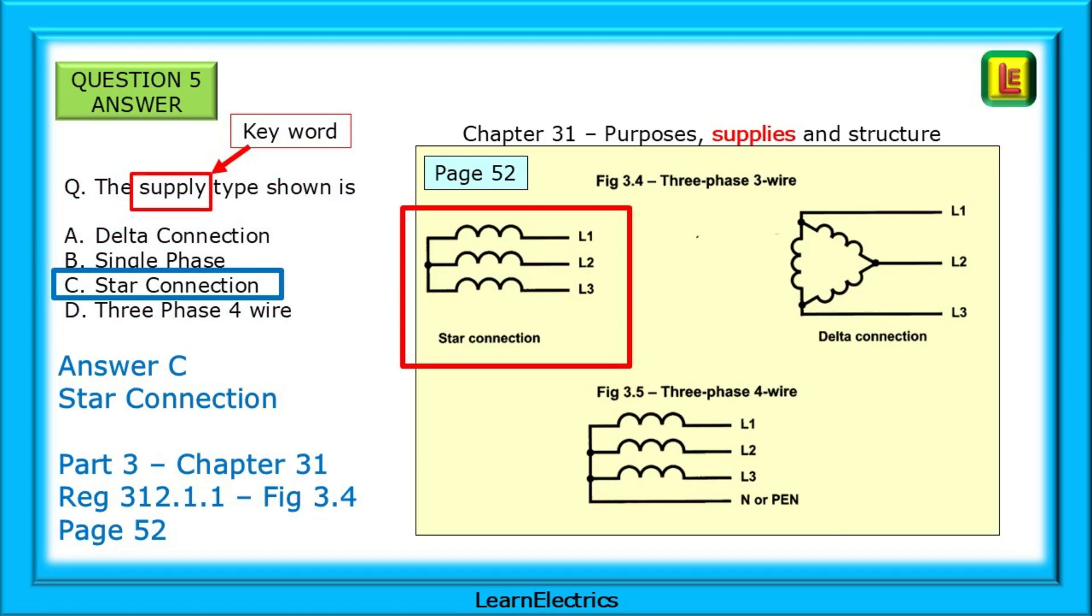Answer C, a star connection. The key word is supply and on page 3 we have chapter 31, purposes, supplies and structure. Look on page 52 to find the answer.